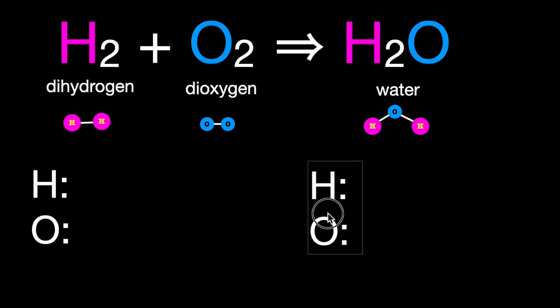On the left side and the right side, we're going to have the same elements, and now we're just going to count them up because maybe we'll be lucky and it's balanced already. On the left, two hydrogen, one, two. Also, two oxygen, one, two.